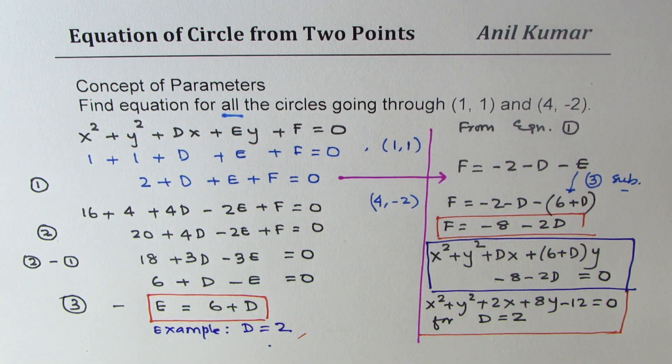Now if you write the equation in this way, we say we have used the parameter d to represent a family of circles which will go through the point (1,1) and (4,-2). I hope that makes sense. Feel free to write your comments and share your views. If you like and subscribe to my videos, that'd be great. Thanks for watching and all the best.